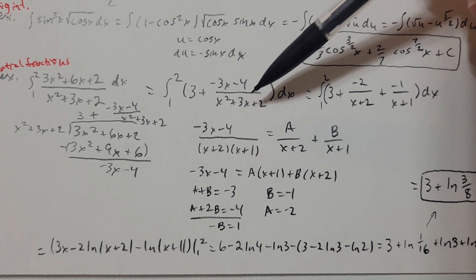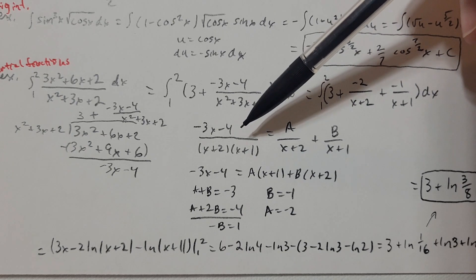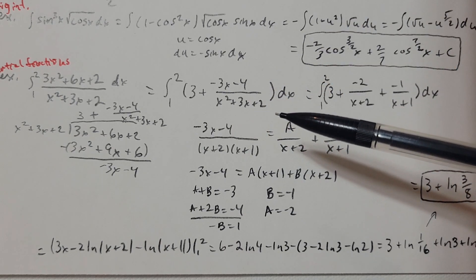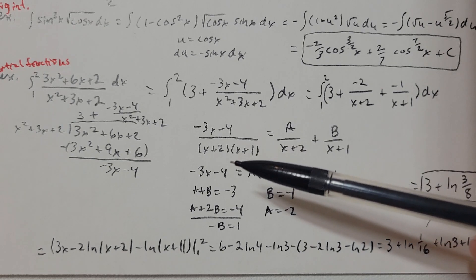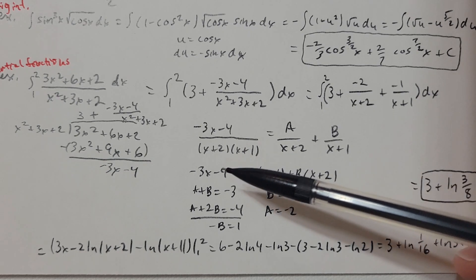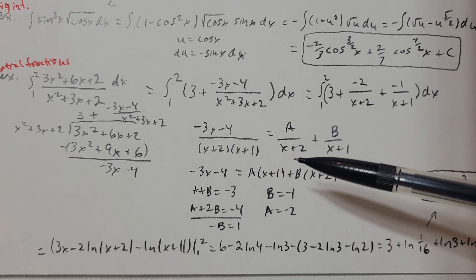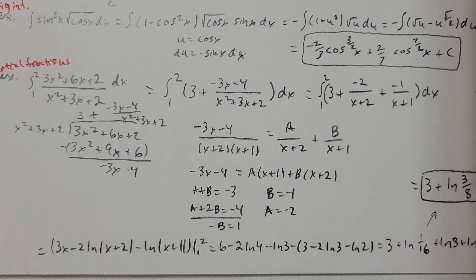But I can use partial fractions. I take (negative 3x minus 4) divided by (x squared plus 3x plus 2), which factors as (x plus 2)(x plus 1). Both of those are linear factors, so I'm going to have A divided by (x plus 2) plus B divided by (x plus 1), and we need to find A and B.